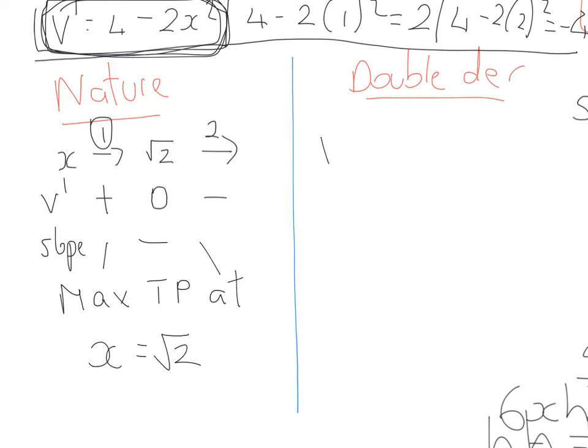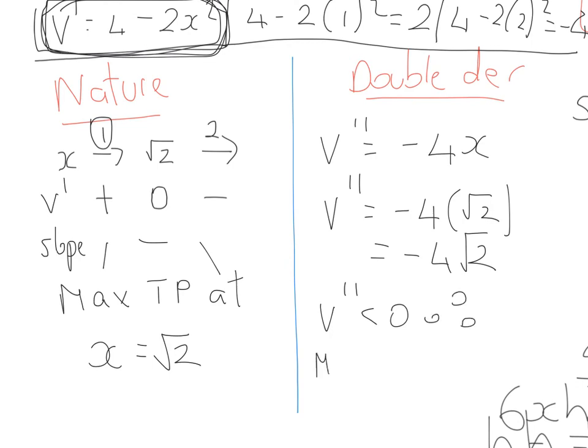For the double derivative method, I take the differentiated function and differentiate it again. So the constant 4 goes, -2x² becomes -4x. Now if it's a maximum, what I should find is that the double derivative value is negative at x equals √2. So -4 times √2, and as expected, that gives me -4√2. So double derivative is less than 0, therefore max turning point at x equals √2.